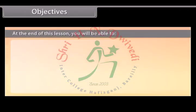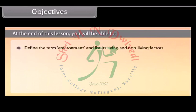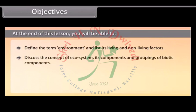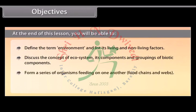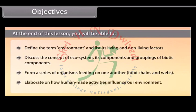At the end of this lesson, you will be able to: define the term environment and list its living and non-living factors; discuss the concept of ecosystem, its components and groupings of biotic components; form a series of organisms feeding on one another — food chains and webs; and elaborate on how human activities influence our environment.